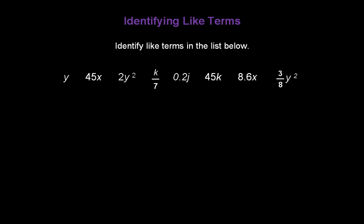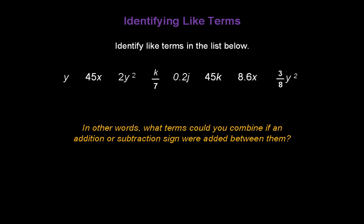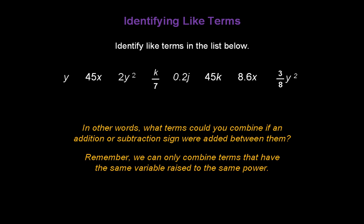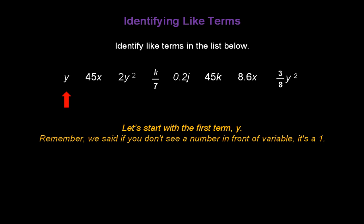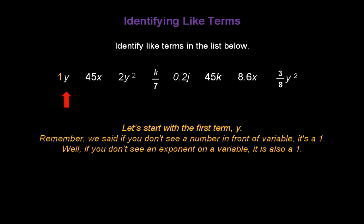Now let's identify like terms in the list below — in other words, what terms could you combine if an addition or subtraction sign were placed between them? Remember, we can only combine like terms that have the same variable raised to the same power. Let's start with the first term, y. If you don't see an exponent on a variable, it's also a 1, so y is y to the first power.